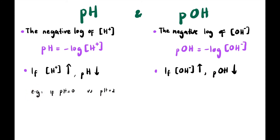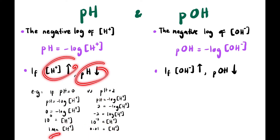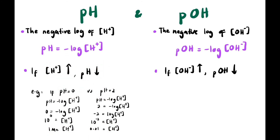Comparing pH 0 and pH 2: for pH 0, 0 = -log[H⁺], so [H⁺] = 10⁰ = 1 M. For pH 2, 2 = -log[H⁺], so [H⁺] = 10⁻² = 0.01 M. From this we can see that pH 0 has a higher concentration of H⁺ than pH 2 — the higher the concentration of H⁺, the lower the pH, and the more acidic the solution.